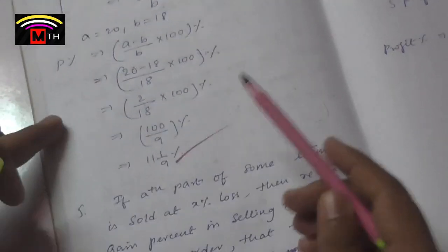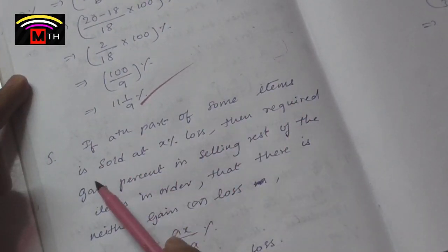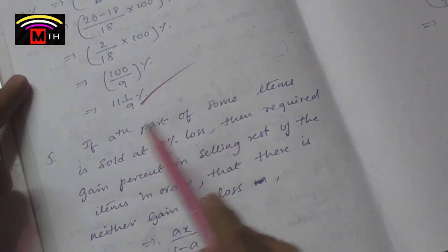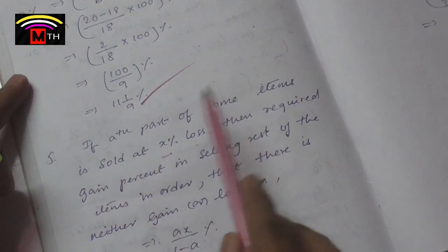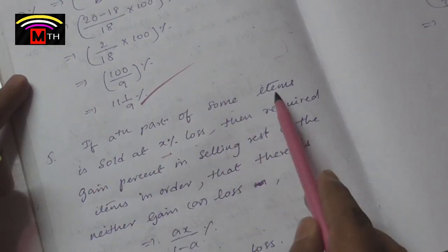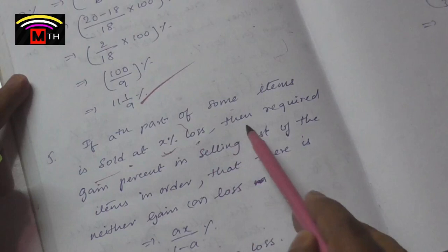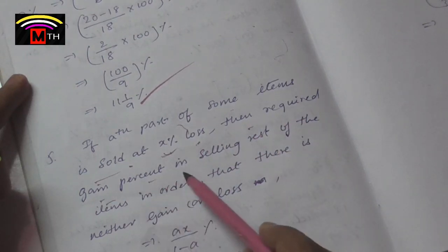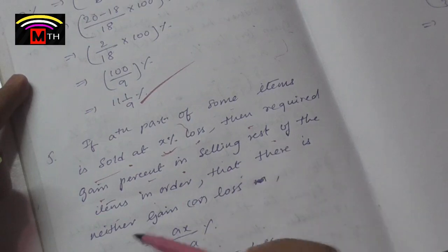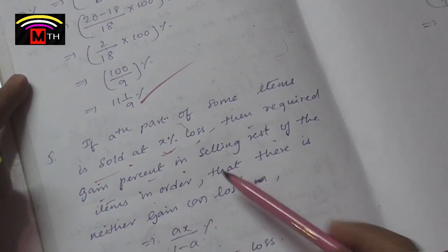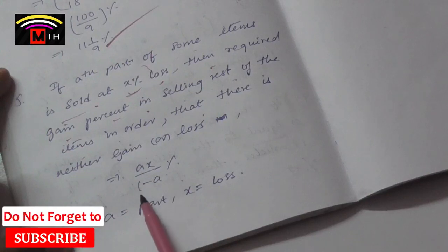If the eighth part of some items is sold at X percent loss, this is the model. One-eighth equals 1 by 8. Then find the required gain percent in selling the rest of the items so that there is neither gain nor loss. The important formula here is AX divided by 1 minus A.